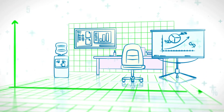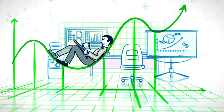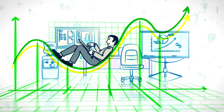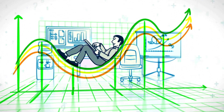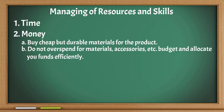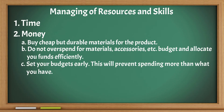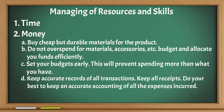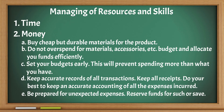Money: one of the most important things in running a business is managing money or finance effectively. Buy cheap but durable materials for the product. Do not overspend on materials, accessories, and budget — allocate your funds efficiently. Set your budgets early; this will prevent spending more than what you have. Keep accurate records for all transactions and keep all receipts. Do your best to keep an accurate accounting of all expenses incurred. Be prepared for unexpected expenses — reserving funds for such situations is safe.